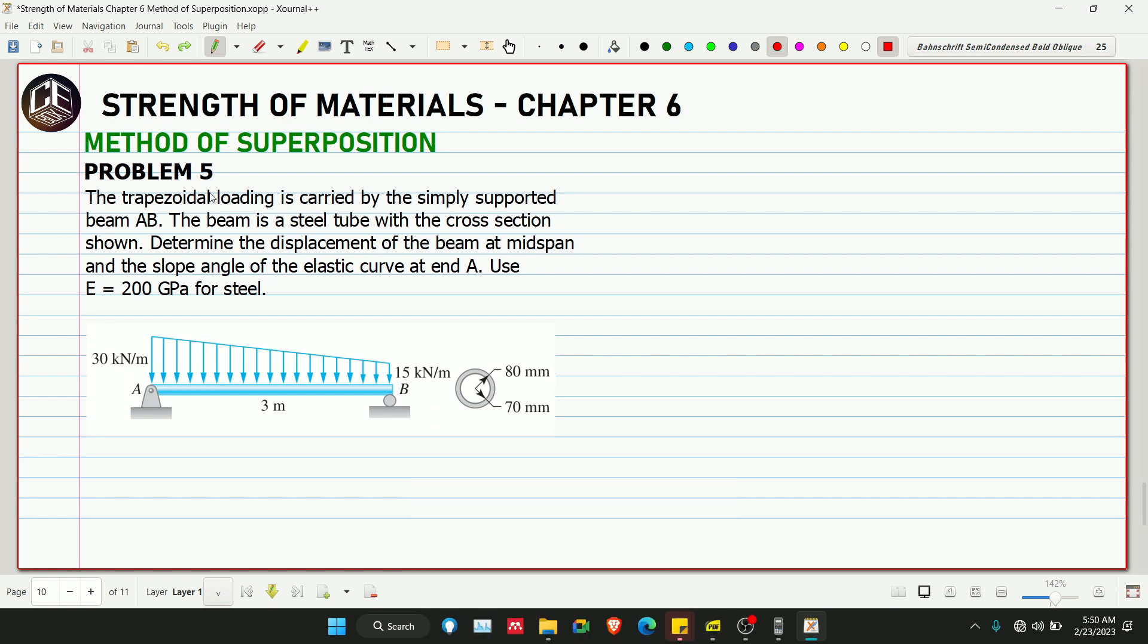The trapezoidal loading is carried by the simply supported beam AB. The beam is a steel tube as shown in the cross-sectional area. Determine the displacement of the beam at mid-span and the slope angle of the elastic curve at end A.